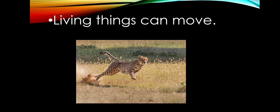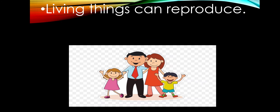Living things can move. We must have seen that all living things can move, for example animals and birds, right? Living things can reproduce — living things can give birth to their young. For example, humans, animals, birds — they all reproduce.